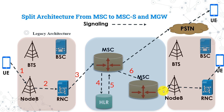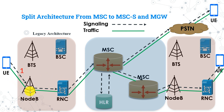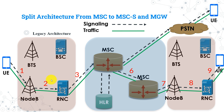The HLR replies with the subscriber location, identifying in which MSC they exist. According to this information, the MSC continues sending the signaling messages to that MSC, and then the other MSC sends the signaling messages to the other user. For user plane traffic, the flow goes from subscriber to BTS, then to BSC, then to MSC, to the other MSC, then to the other subscriber. We can notice that MSC is doing both functions: control signaling and user plane traffic. This is what we mean by legacy or monolithic architecture.